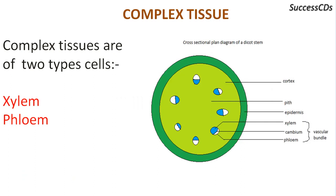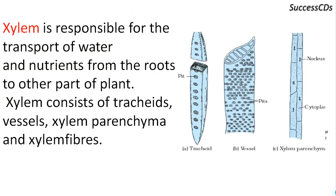Now let's see complex tissues. Complex tissues are of two types: xylem and phloem. Xylem is responsible for the transportation of water and nutrients from the root to the upper part of the plant. It is composed of four types of cells. First is the vessel, which is a pipe-like structure; vessels are basically dead and have lignified thick cell walls. Tracheids are long elongated cells with tapered endings; cells are dead and these transport water through pits.